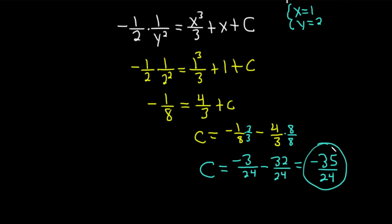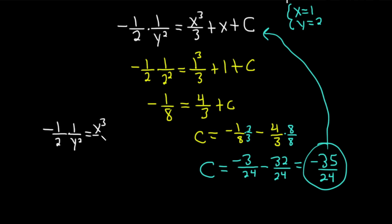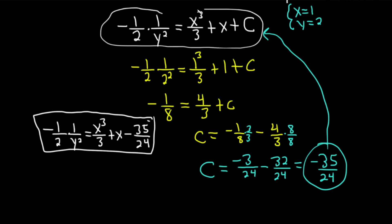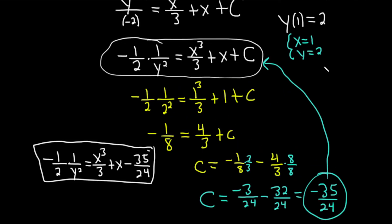Now we take our C and plug it back into the equation. We get negative one-half times 1 over y squared equals x cubed over 3 plus x minus 35 over 24. This is the solution to our initial value problem. When you solve a differential equation you get infinitely many solutions — different choices for C give different solutions. Our condition y of 1 equals 2 picks one solution from this infinite family: the one that passes through the point (1, 2) graphically.